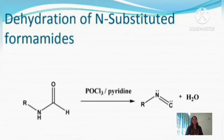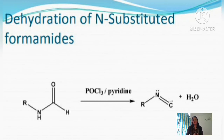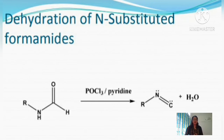Isocyanide can also be prepared by dehydration of N-substituted formamide. When a primary amine undergoes dehydration with POCl₃ or SOCl₂, a cyanide compound is obtained. Similarly, when N-substituted formamide undergoes dehydration with POCl₃ in the presence of pyridine as solvent, carbylamine (isocyanide) is obtained as the product.